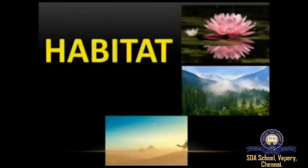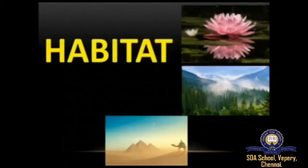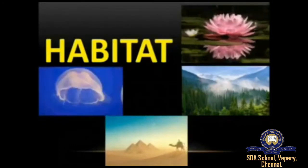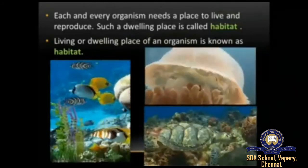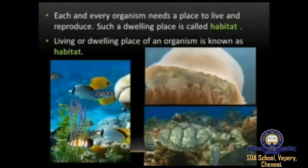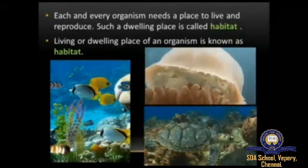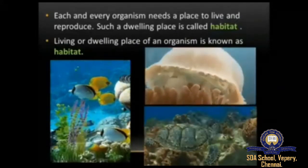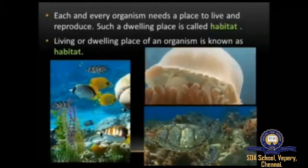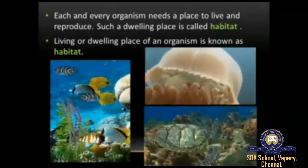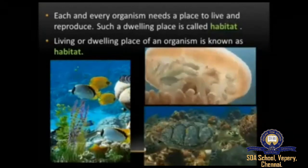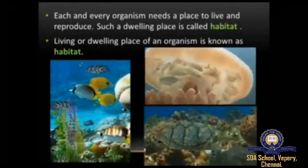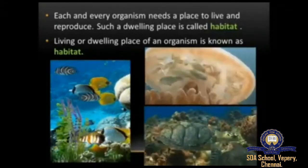Next we'll move on to habitat. You would have already learned about habitat in detail in the previous class. Each and every organism needs a place to live and reproduce, and such a dwelling place is called habitat. The living or dwelling place of an organism is called a habitat.